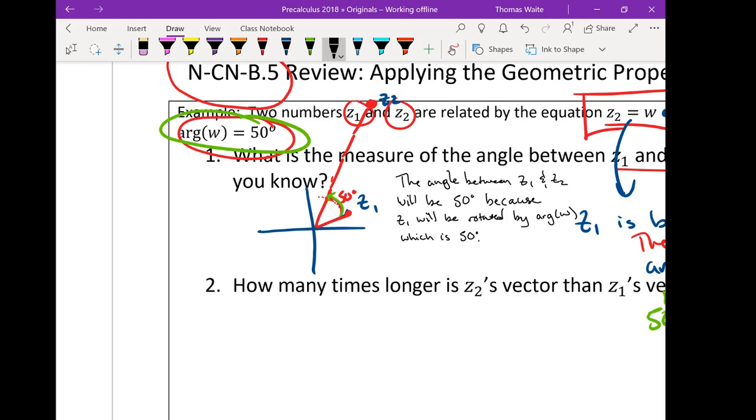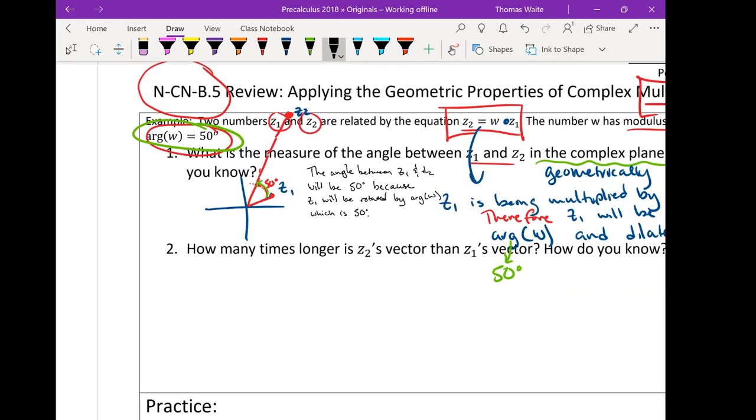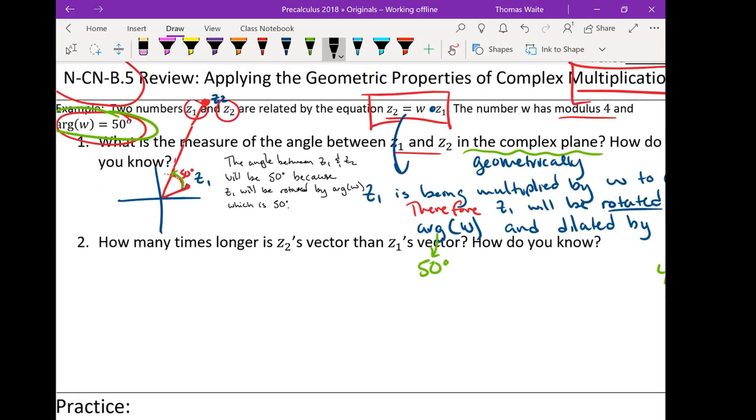Okay. So that does a pretty good job for the first one. Actually, the second one is going to help us. It's all tied to the same type of thing. It says, how many times longer is Z2's vector than Z1's vector? How do we know? So remember, back to our original question, we didn't know anything about Z1 and Z2 other than they're related by W.